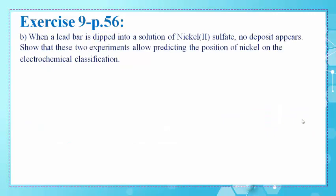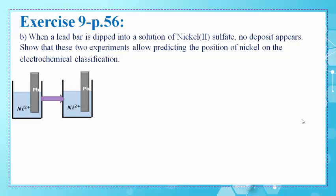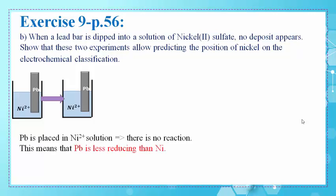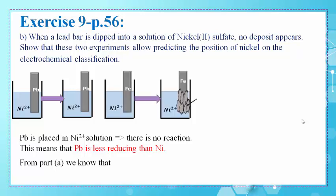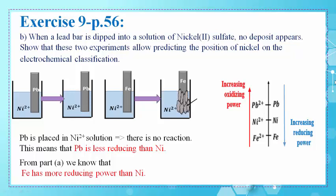In part B, when a lead bar is dipped into a solution of nickel sulfate, no deposit appears, meaning no reaction takes place. This means Pb is less reducing than Ni. From part A, we know Fe reacts with Ni2+, so Fe has more reducing power than Ni. Since Pb is less reducing than Ni, we place Pb2+/Pb above Ni2+/Ni on the axis, since reducing power increases downwards.